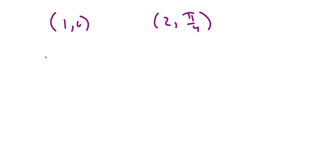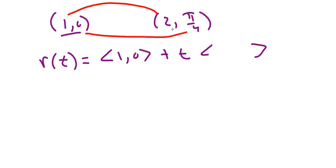A line segment between them, r(t). You just take the first point as your starting vector plus some scalar t times the direction vector. And to get a direction vector, it's easy. You just subtract the x's and subtract the y's. So to go from 1 to 2, I'm going this way. I must have gone up 1. And to go from 0 to π/4, I went up π/4.